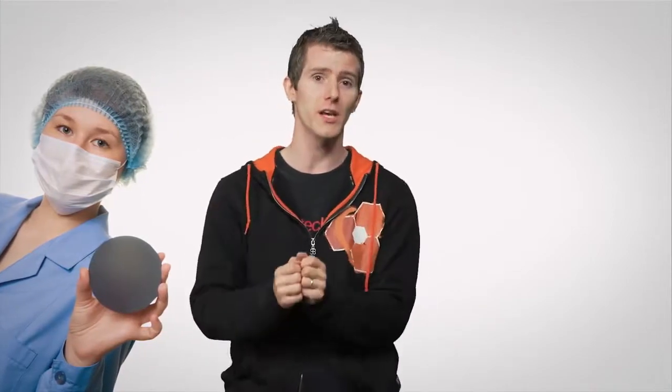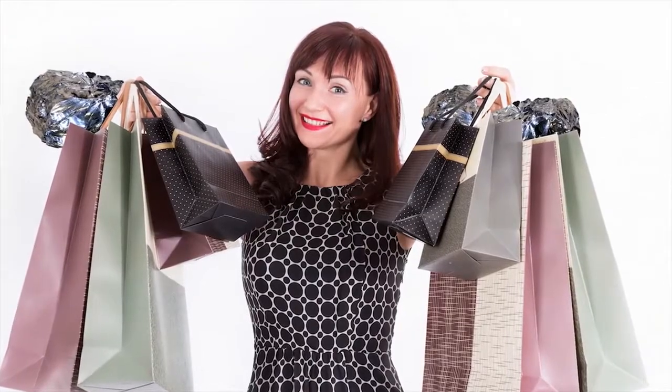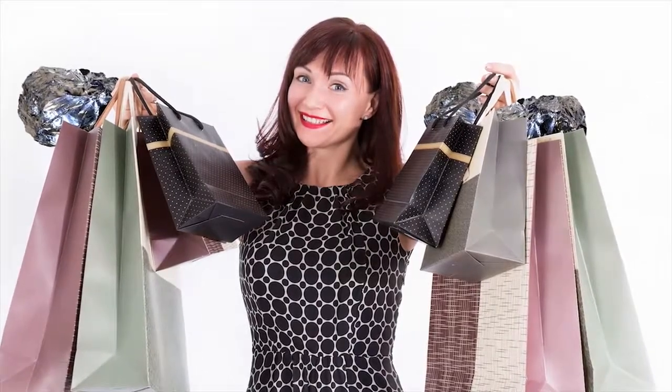But you still haven't answered the question — why silicon specifically, instead of some other semiconductor like germanium? Well, although Silicon Valley might be an expensive place to live, actual silicon is quite cheap, and it's also pretty easy to find in the Earth's crust. In fact, silicon is one of the most common elements in the universe.